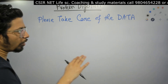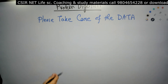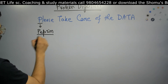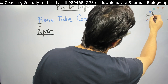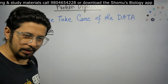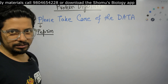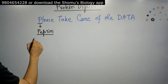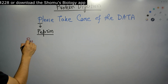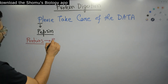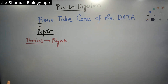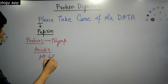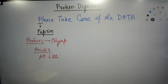Starting with the very first word — 'Please' — P stands for Pepsin. Protein digestion begins with pepsin. It never begins in the mouth; it begins in the stomach. Pepsin acts in a very acidic environment, at around pH 2. Pepsin breaks down complex three-dimensional proteins into polypeptides.